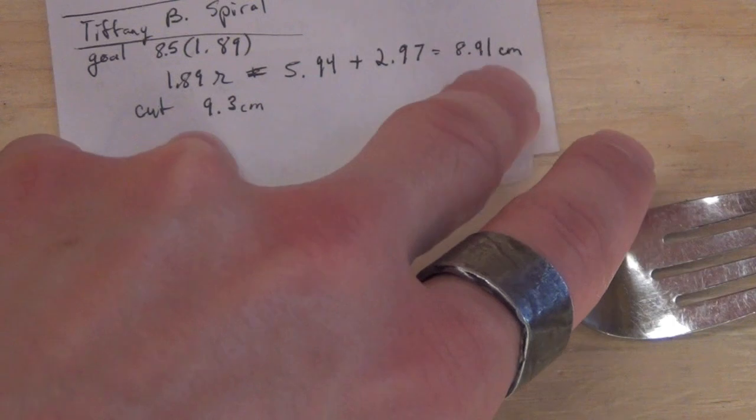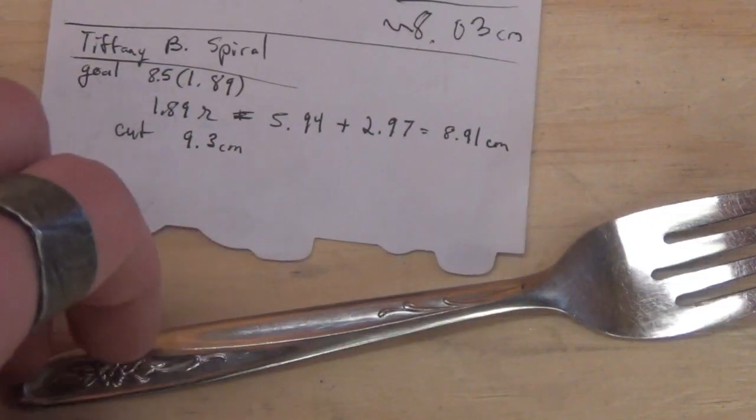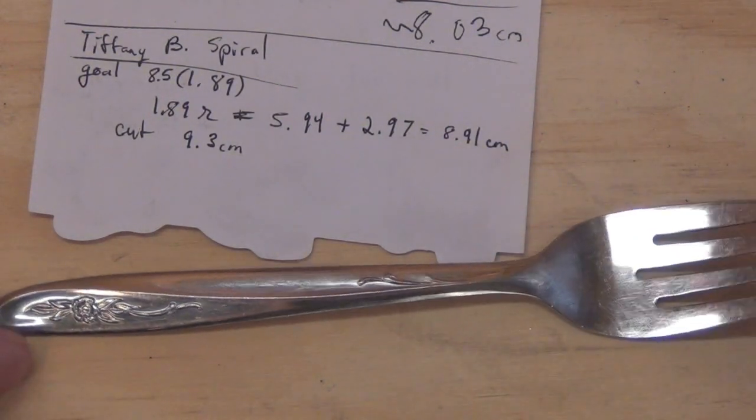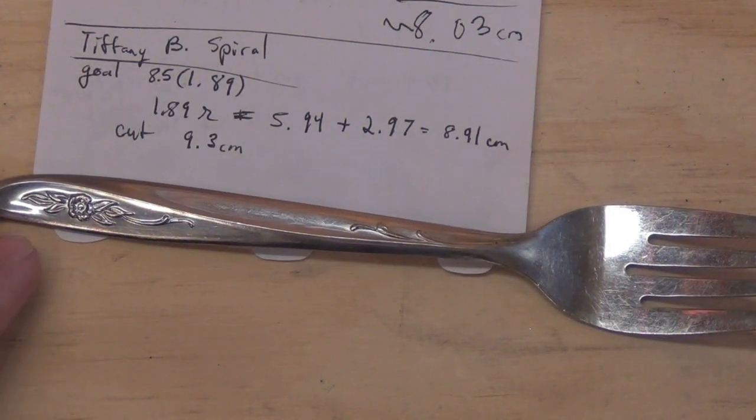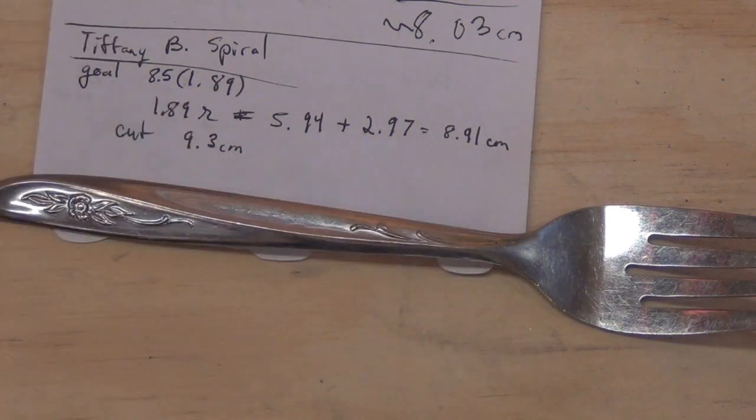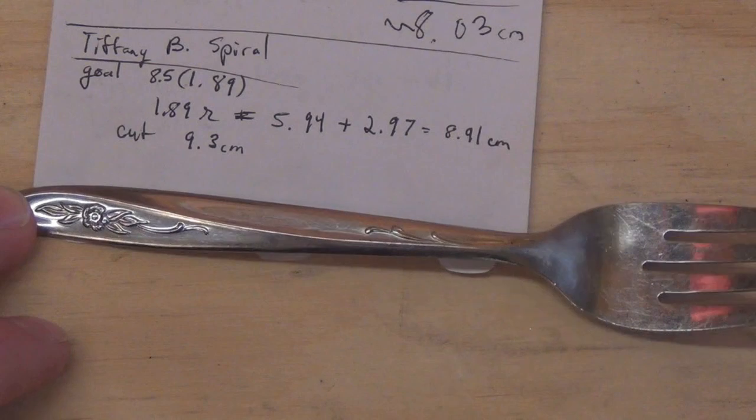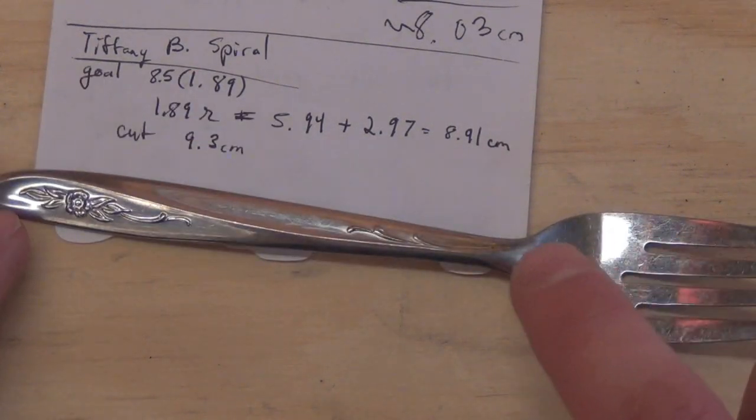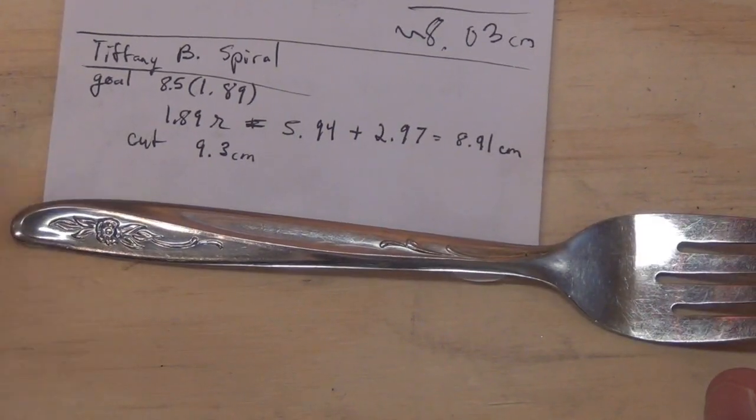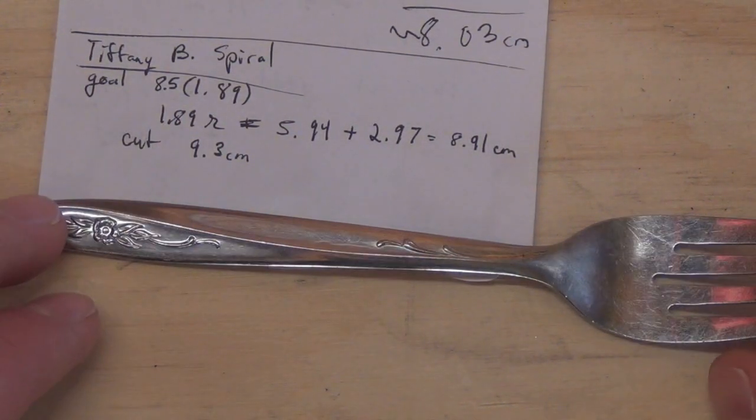However, I'm going to cut it at 9.3 because I made another one using a fork very similar to this and I cut it at 9 centimeters, giving a 0.1 wiggle room, but that turned out to be a one and a quarter twist. It went around once and then just kind of went around a quarter, so I want to get it closer to a true one and a half twist.